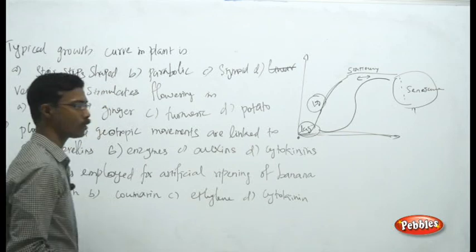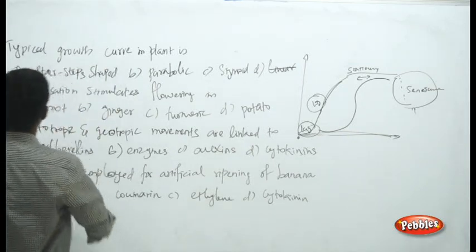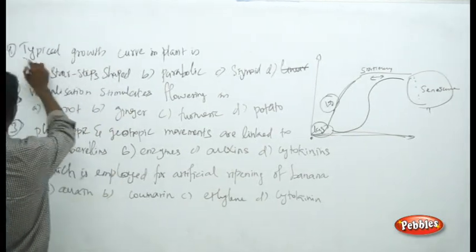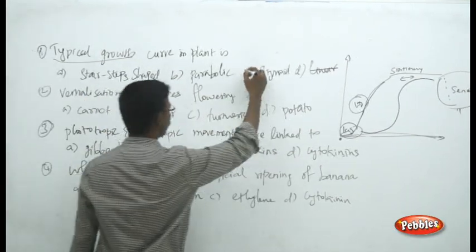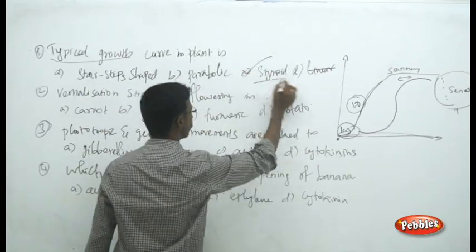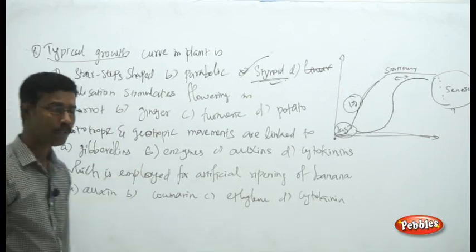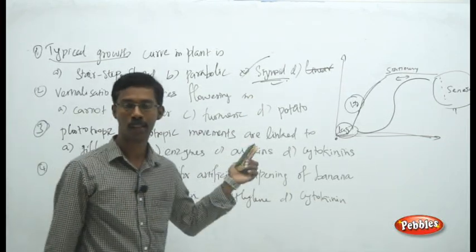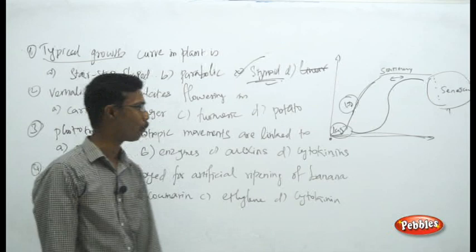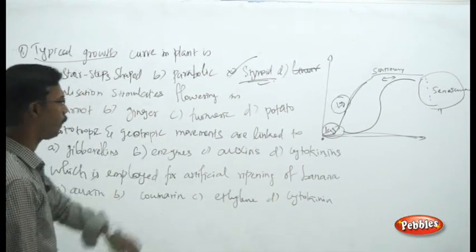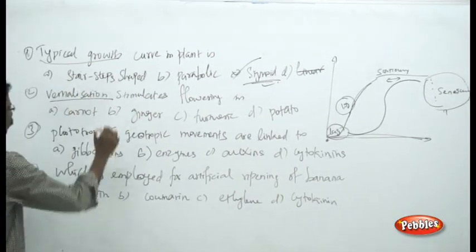This is the normal possible growth curve for plant growth. The answer: the typical growth curve in plants is sigmoid. It will not be stair-shaped, linear, or parabolic — it will be sigmoid.